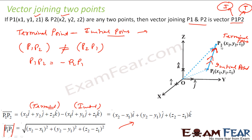The only thing to keep in mind is: when you say p1p2, p1 is the initial point and p2 is the terminal point. When writing the vector p1p2, first take p2's coordinates, then subtract p1's coordinates — that is how you write it.